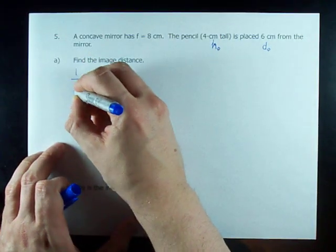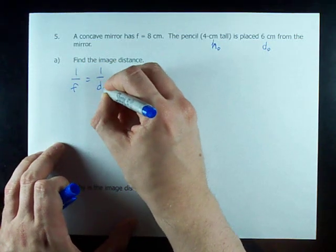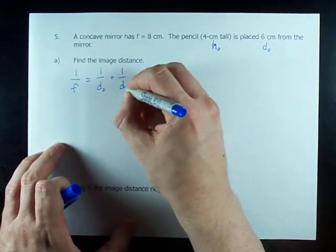Which means to find the image distance, I only need 1 over F equals 1 over D_O plus 1 over D_I.